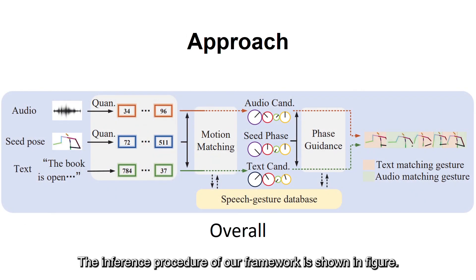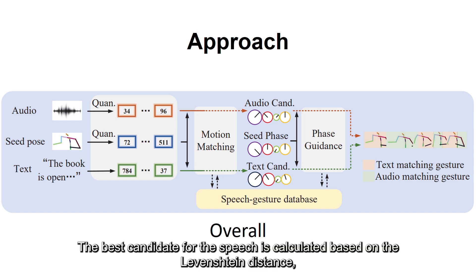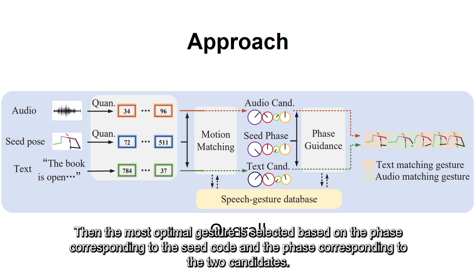The inference procedure of our framework is shown in the figure. Given a piece of audio, text, and seed pose, the audio and gesture are first quantized. The best candidate for the speech is calculated based on the Levenshtein distance, and the best candidate for the text is calculated based on cosine similarity. Then the most optimal gesture is selected based on the phase corresponding to the seed code and the phase corresponding to the two candidates.